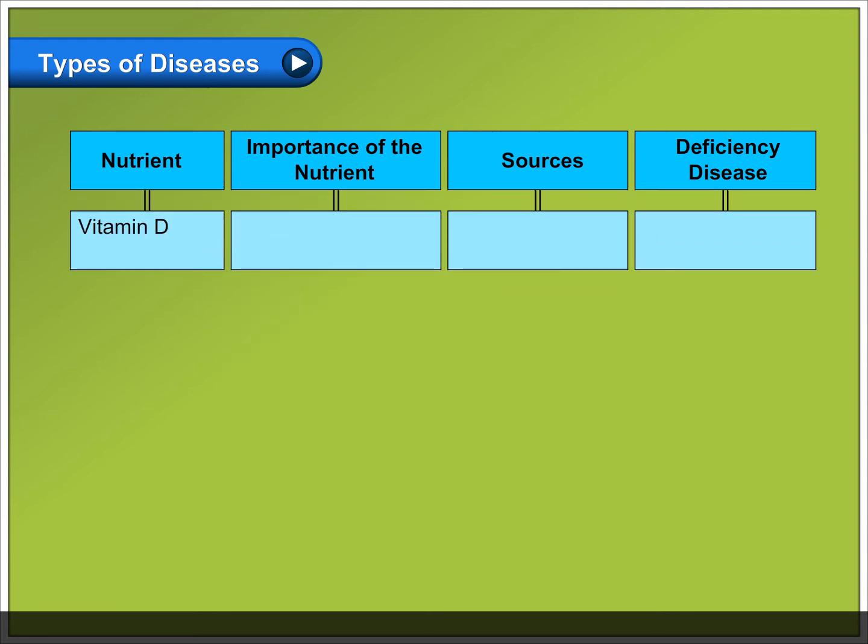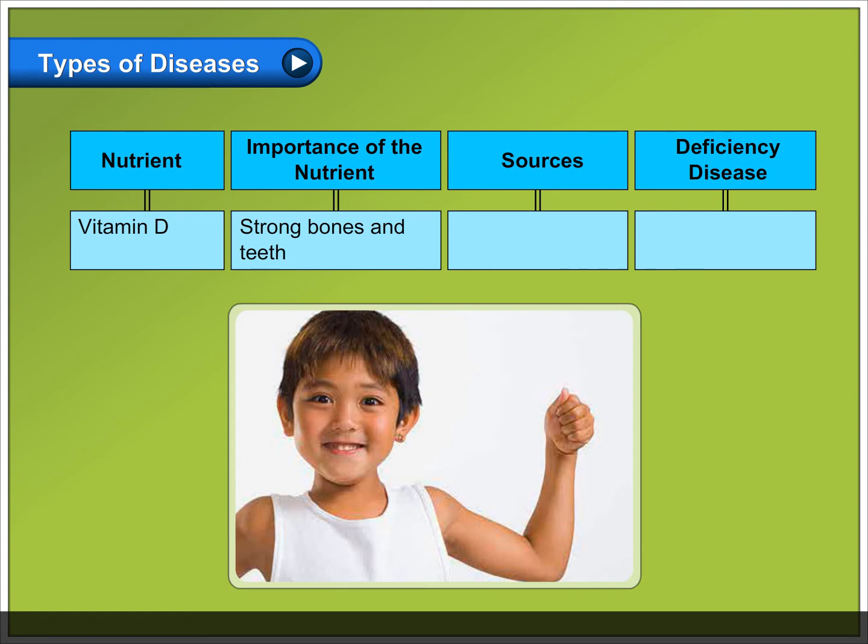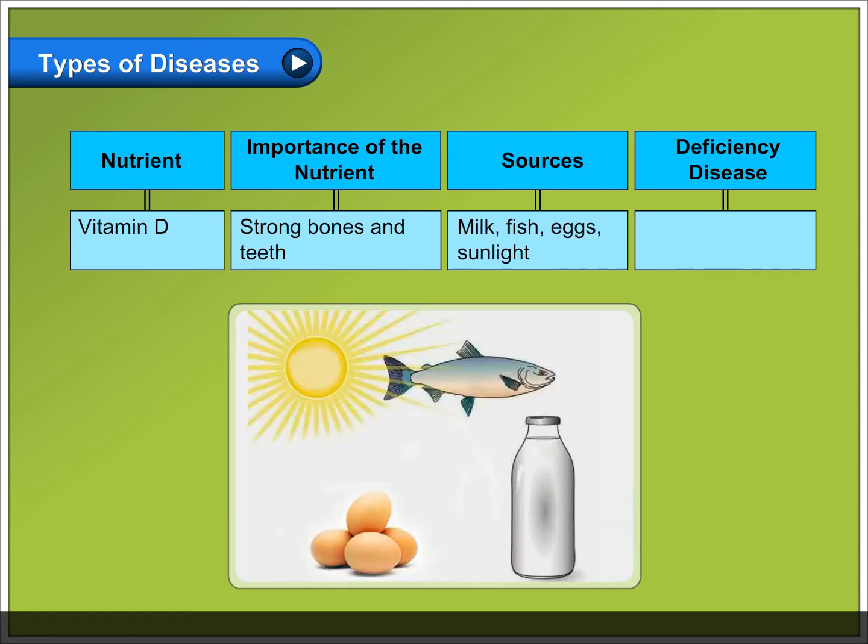Vitamin D: important for strong bones and teeth. Sources include milk, fish, eggs, and sunlight. Deficiency causes rickets.